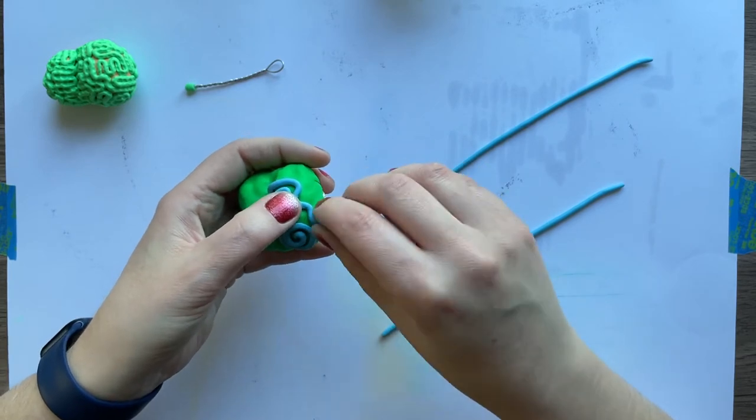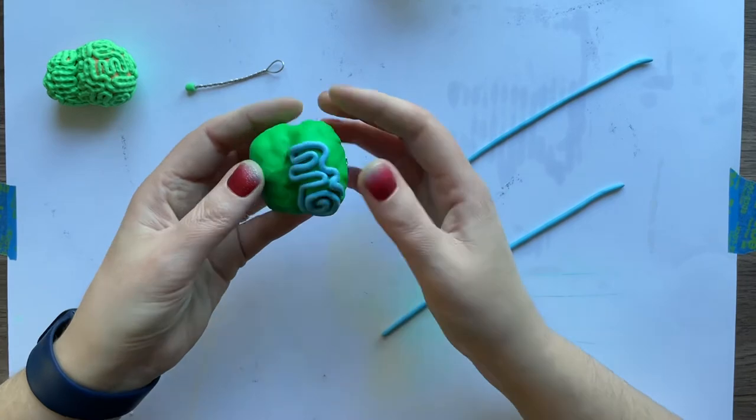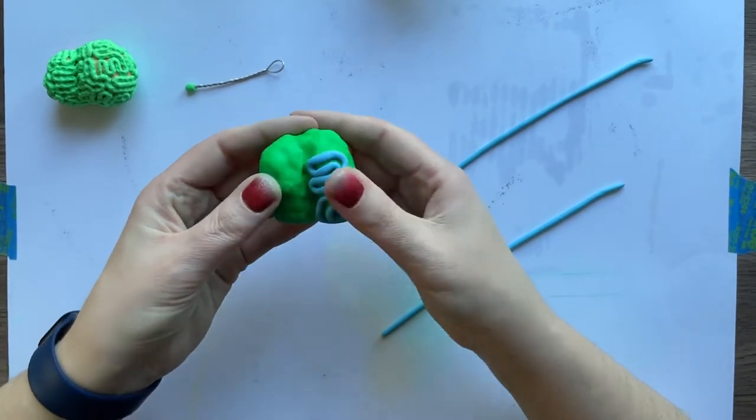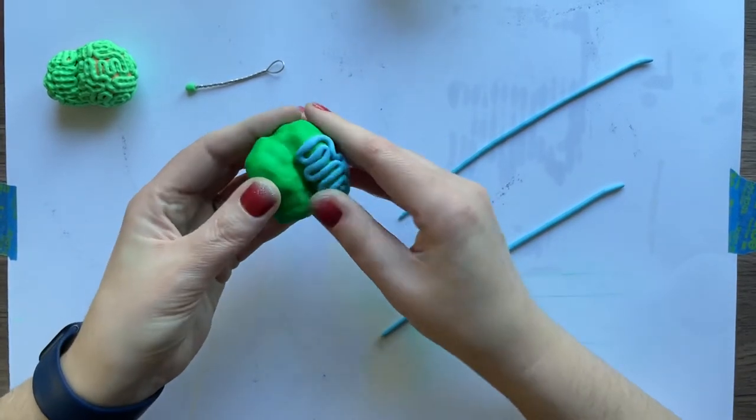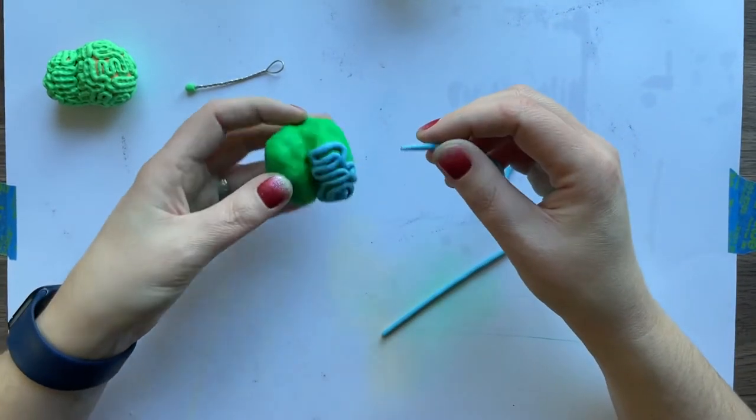Once you get to the end of your coil, just gently push it on there to make sure that it's stuck real good, and then just keep adding more and more stuff on.